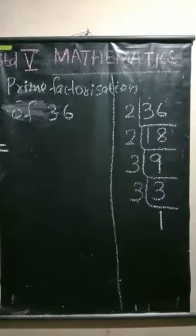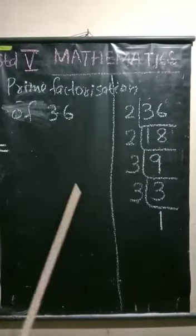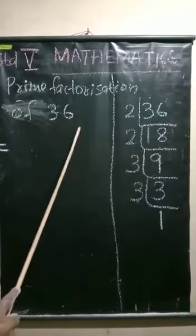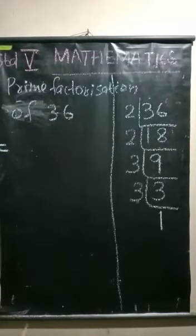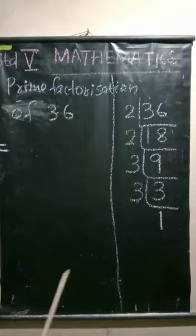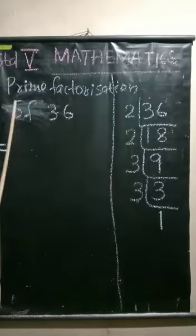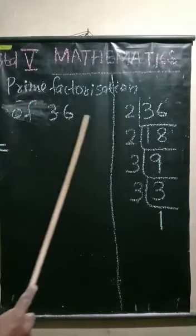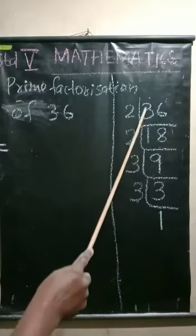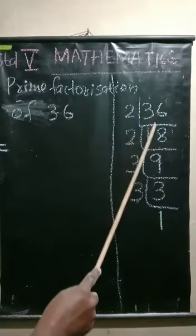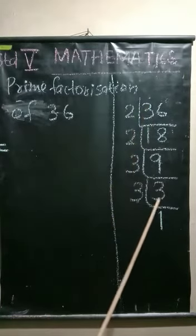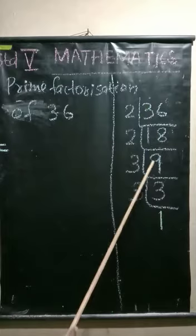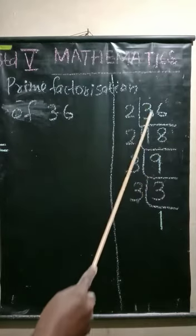Next question: express 36 in exponential prime factorization form. First, we should find the prime factors of 36, and here we find the prime factorization of 36 by the division method.